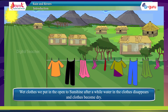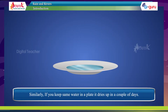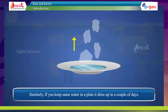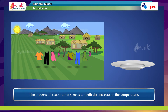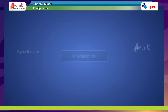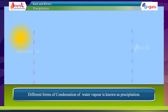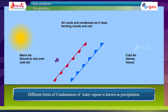Wet clothes put in open sunshine dry after a while — the water disappears. Similarly, if you keep some water in a plate, it dries up in a couple of days. The water in the clothes or in the plate becomes water vapor and mixes with the air through a process called evaporation. The process of evaporation speeds up with an increase in temperature.